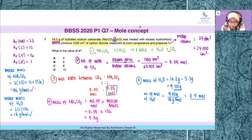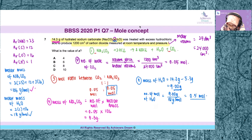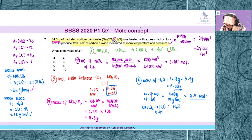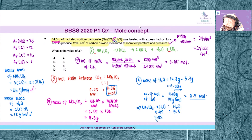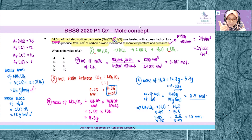Note that this 0.5 moles comes from 0.05 moles of the hydrated salt. We compare the mole ratio of Na₂CO₃·xH₂O to H₂O: 0.05 is to 0.5. Making the hydrated salt a value of 1, we divide both sides by 0.05, giving 1:10. This means in one mole of hydrated sodium carbonate there are 10 moles of water, hence x equals 10. The answer is D.